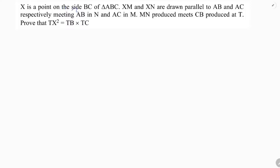X is a point on side BC of triangle ABC. XM and XN are drawn parallel to AB and AC respectively, meeting AB in N and AC in M. MN produced meets CB produced at D. We need to prove TX² = TB × TC.